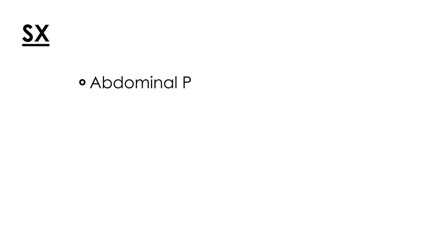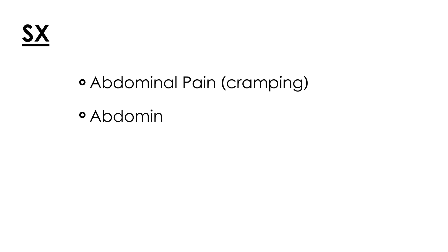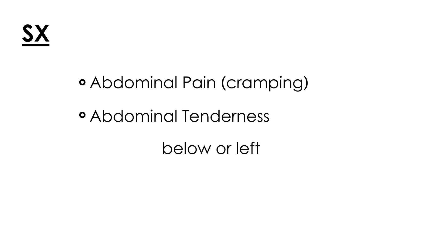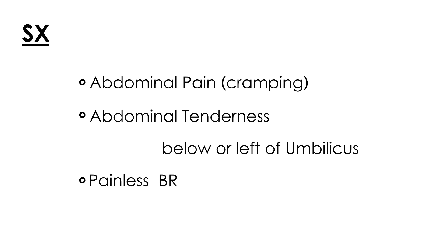The symptoms of Meckel's diverticulum, if complications occur, include abdominal pain — cramping pain is often described — and abdominal tenderness, which is often located below or slightly to the left of the umbilicus. Another very worrisome but common finding is painless, bright red blood per rectum.